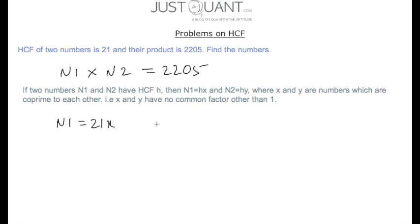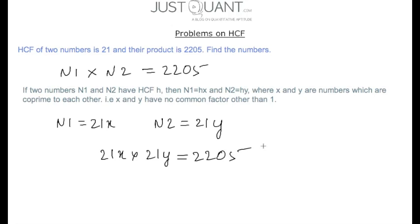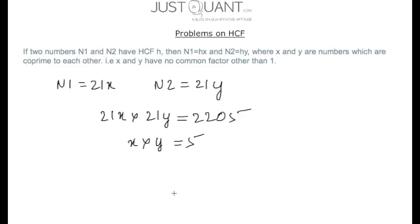Since the product of n1 and n2 is 2205, we write 21x × 21y = 2205, which gives us x × y = 5. Since x and y are co-primes with product 5, the two values are 1 and 5. Hence n1 = 21 × 1 = 21.